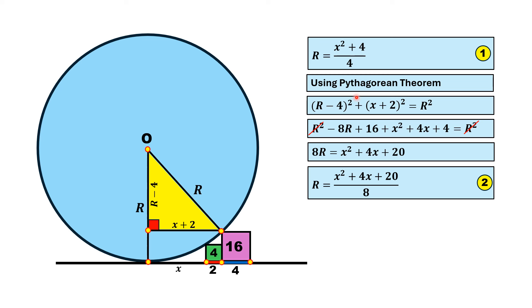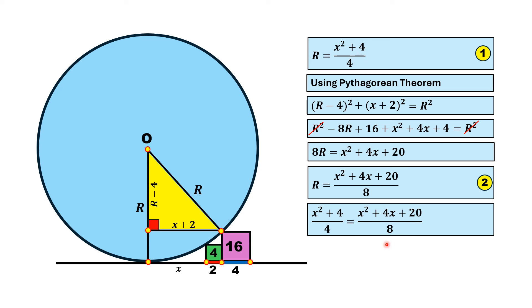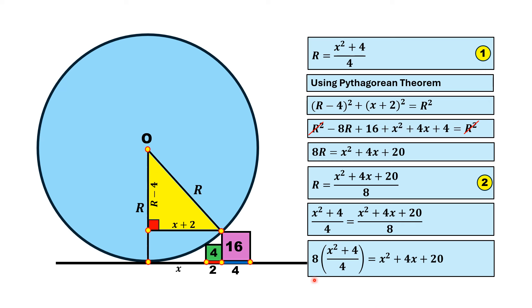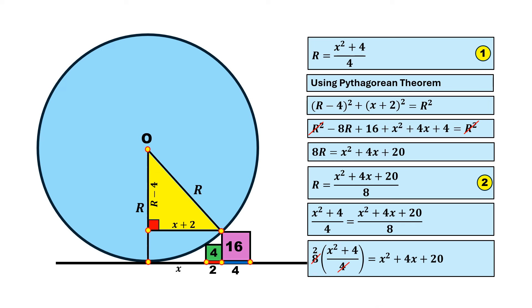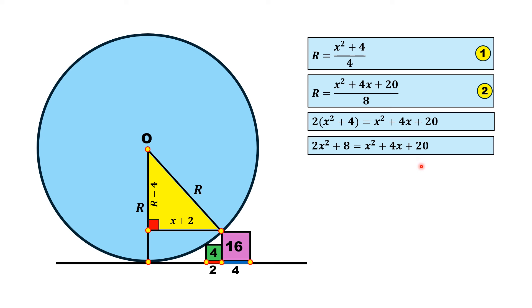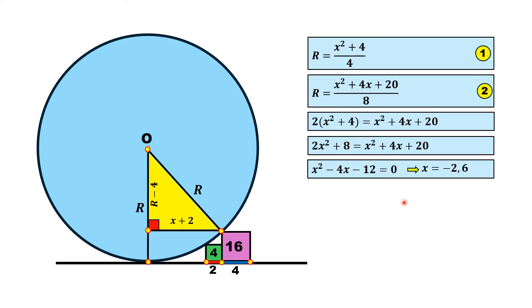From Equations 1 and 2, both expressions equal r, so we equate them. Multiplying both sides to clear denominators, and after simplification we get 2 times (x squared plus 4) equals x squared plus 4x plus 20, which gives 2x squared plus 8 equals x squared plus 4x plus 20. After simplification this becomes x squared minus 4x minus 12 equals 0, a quadratic in x. Solving gives two values: x equals minus 2 and x equals 6. Since x is a length it cannot be negative, so x equals 6.